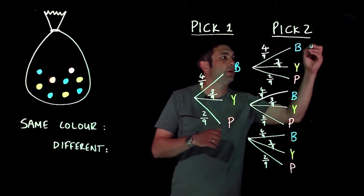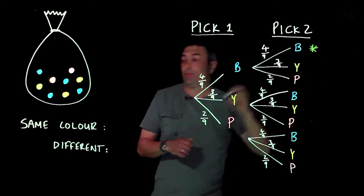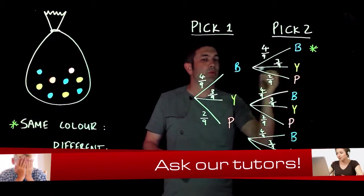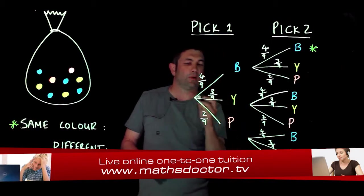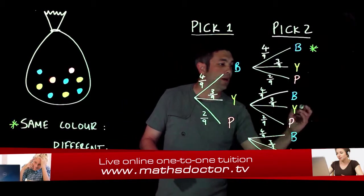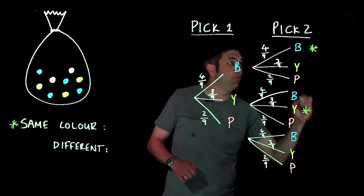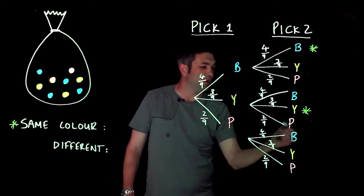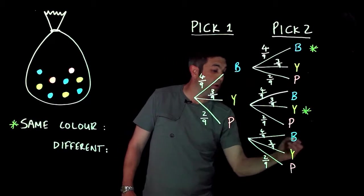I've got blue-blue, so I'm going to actually star that there because those are the ones I'm looking for here. So blue-blue, yellow is not the same color, blue-pink is not the same color, but yellow-blue, yellow-yellow. So I could have blue-blue or I could have yellow-yellow.